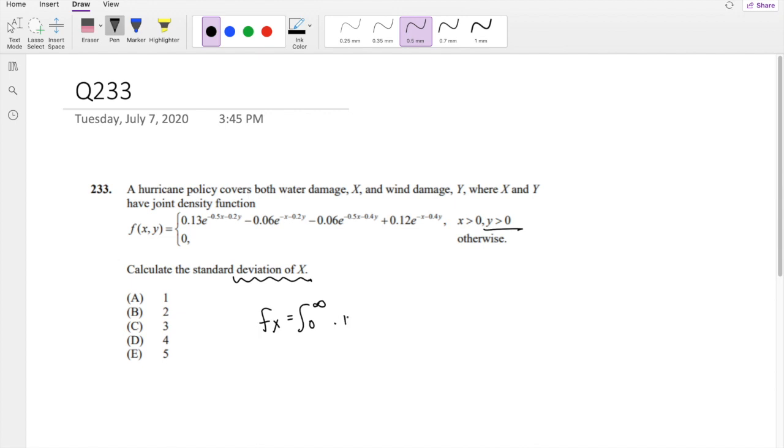So of this whole function right here, dy. Alright, so when we do that, I think it'll be easiest to think of it like this. So think of it like 0 to infinity, 0.13 of e to the negative 0.5x times e to the negative 0.2y.